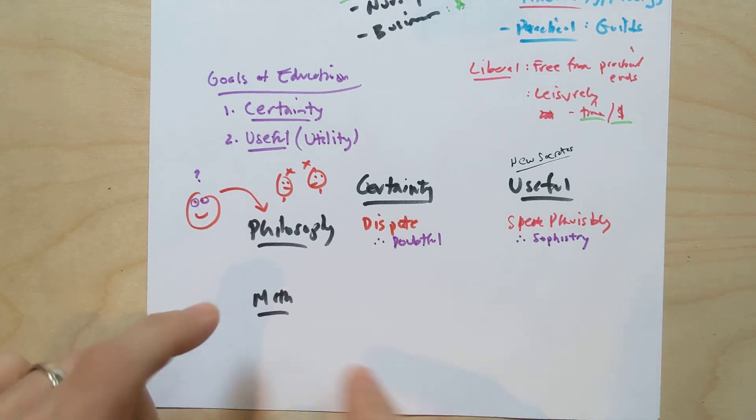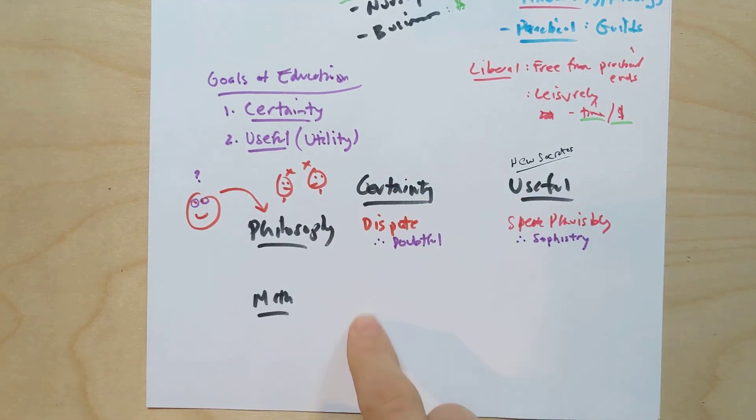Okay. So let's contrast that with mathematics. When Descartes thinks about mathematics and Descartes was a mathematician, I'm going to talk about the mathematics of Descartes in another video. But Descartes was a mathematician. What does he say about math? Well, is math certain? Is math useful? What do you think he's going to say?